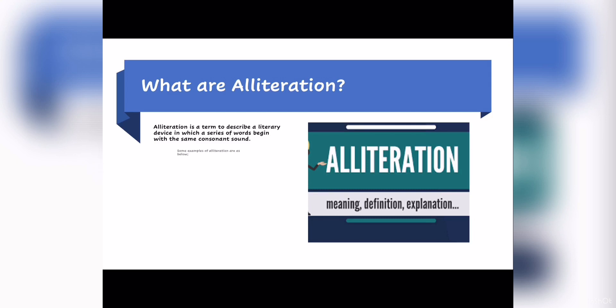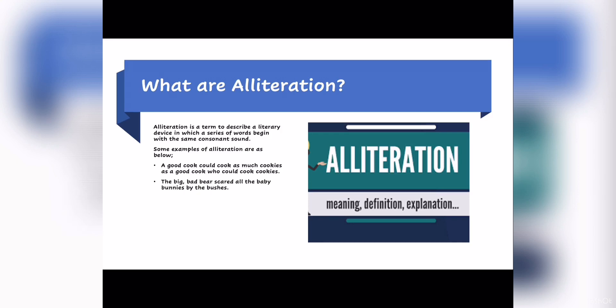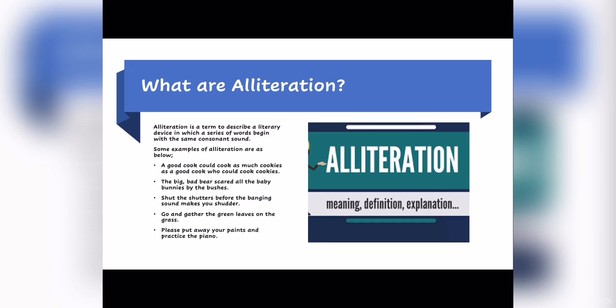Now let's see some examples of alliteration. Number 1: a good cook could cook as many cookies as a good cook who could cook cookies. Number 2: the big bad bear scared all the baby bunnies by the bushes. Number 3: shut the shutters before the banging sound makes you shudder. Number 4: go and gather the green leaves on the grass. And the last one: please put away your paints and practice the piano.